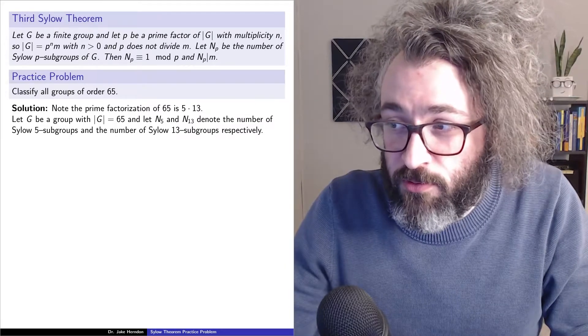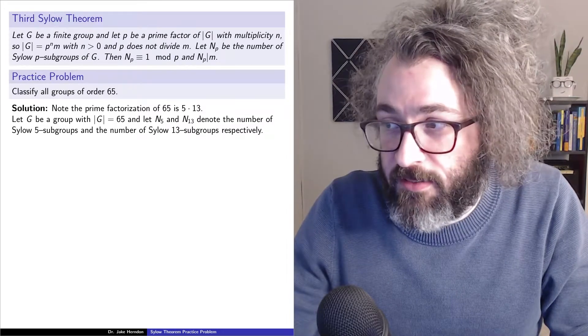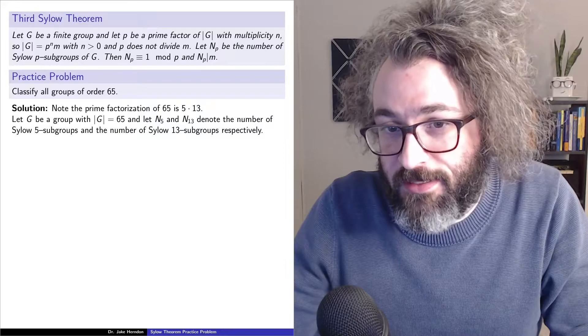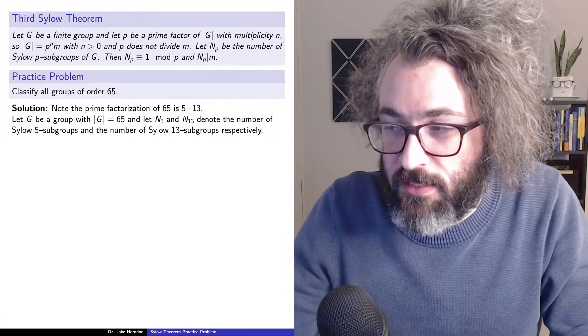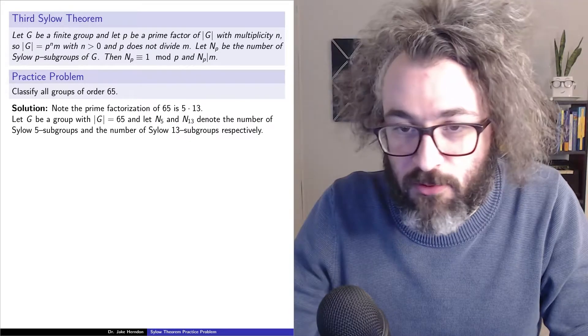Let G be a group whose order is 65, and let n_5 and n_13 denote the number of Sylow 5 subgroups and the number of Sylow 13 subgroups respectively.